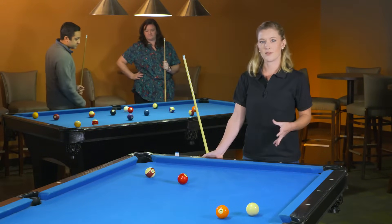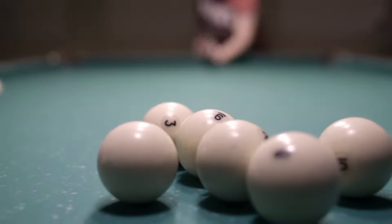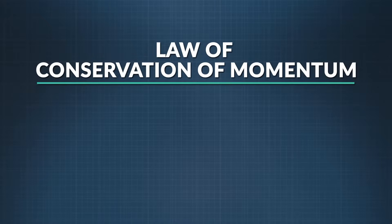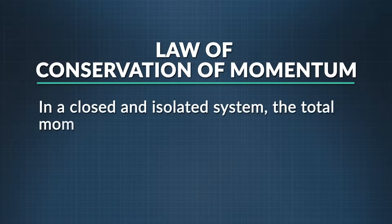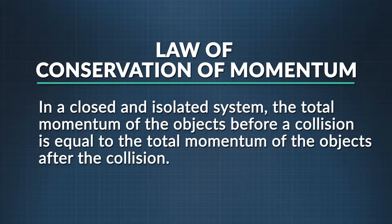So what do you think happens to the momentum of billiard balls when they strike another ball? If you figured that the momentum is conserved, you're right. The law of the conservation of momentum says that in a collision between objects in a closed and isolated system, the total momentum of the objects in the system before the collision is equal to the total momentum of the objects in the system after the collision.